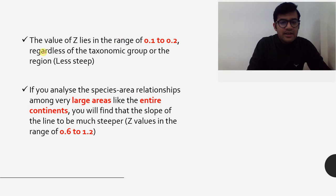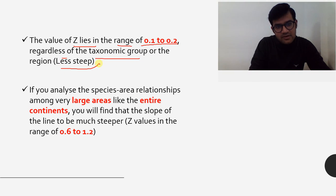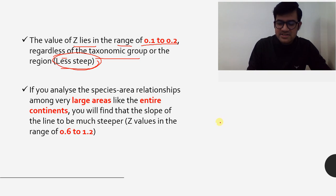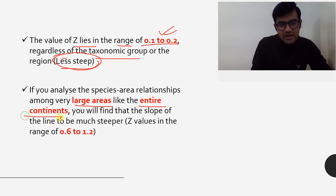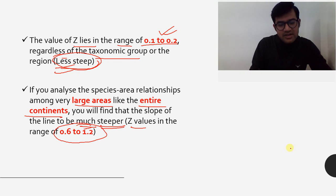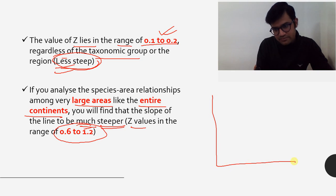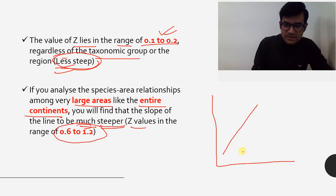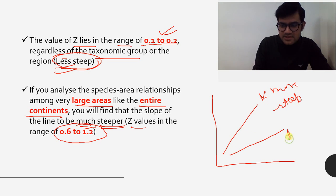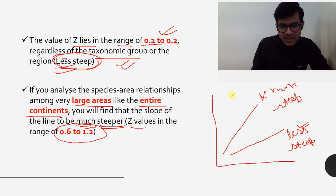The importance of Z lies in these points from your textbook: for smaller regions, regardless of taxonomic group — whether mollusks, birds, or insects — the Z value lies between 0.1 to 0.2. When you increase to larger areas like continents, the Z value is around 0.6, meaning the slope is more steep for larger areas and less steep for smaller regions. Looking at the graph, one line is more steep and one is less steep, corresponding to large and small areas respectively.